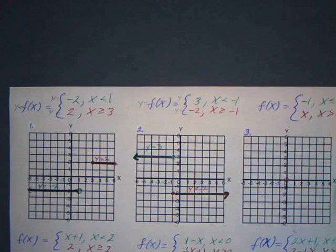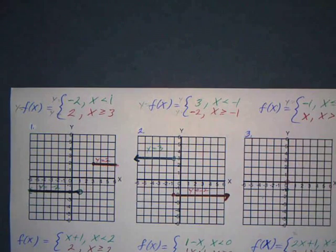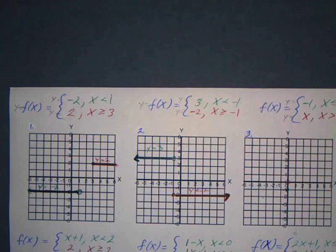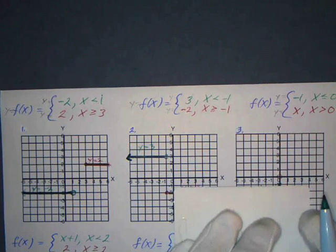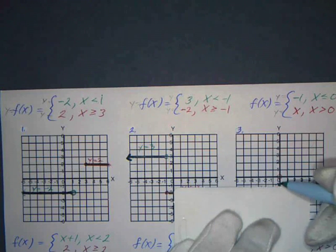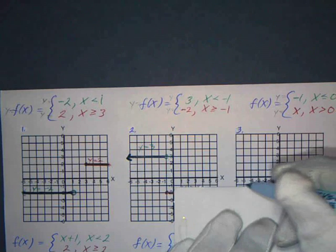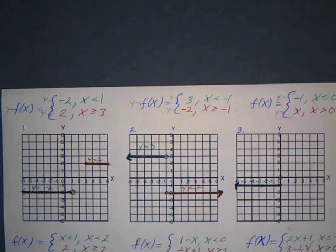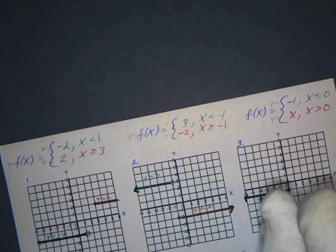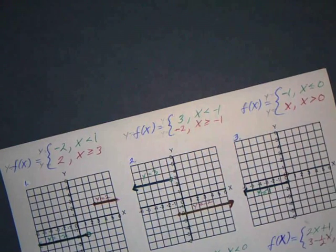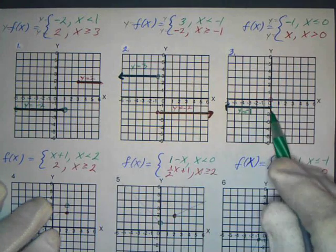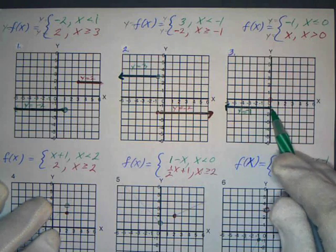Let's try number three. This is y equals negative one. You should be able to graph the line y equals negative one and then y equals x — two lines to graph. So y equals negative one as long as x is less than or equal to zero. We've got a filled dot at negative one and the line goes to the left. You can label that line y equals negative one. The dot is at zero because x is less than or equal to zero, so y is equal to negative one.